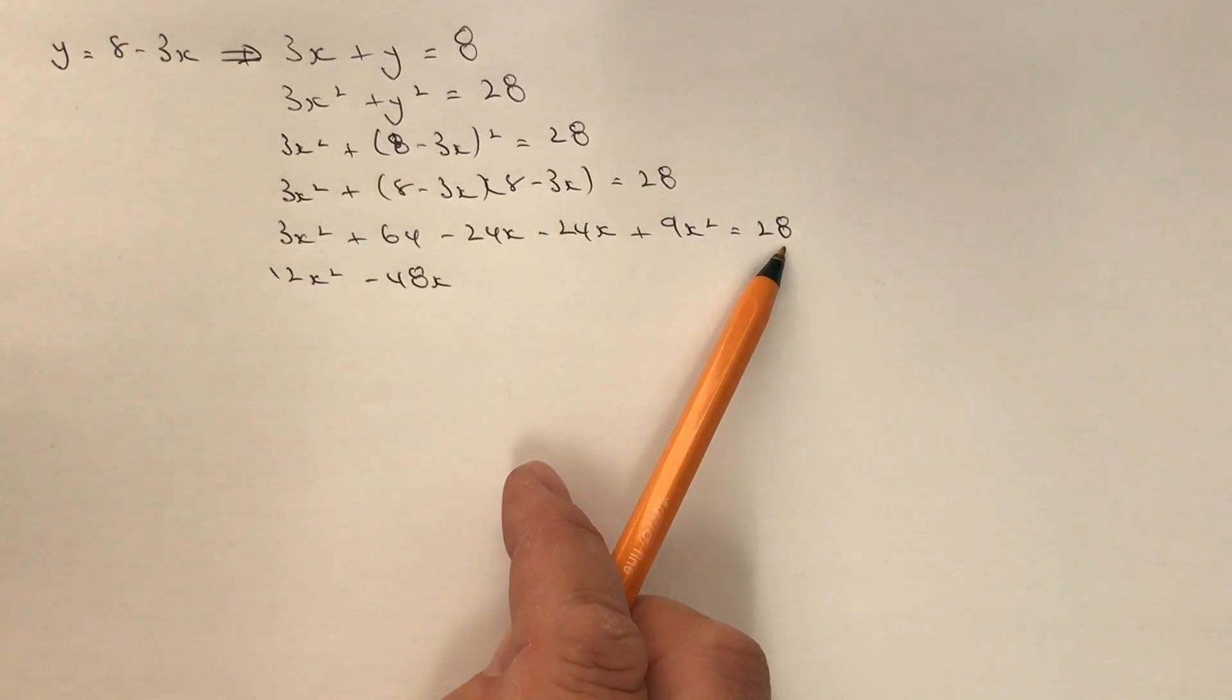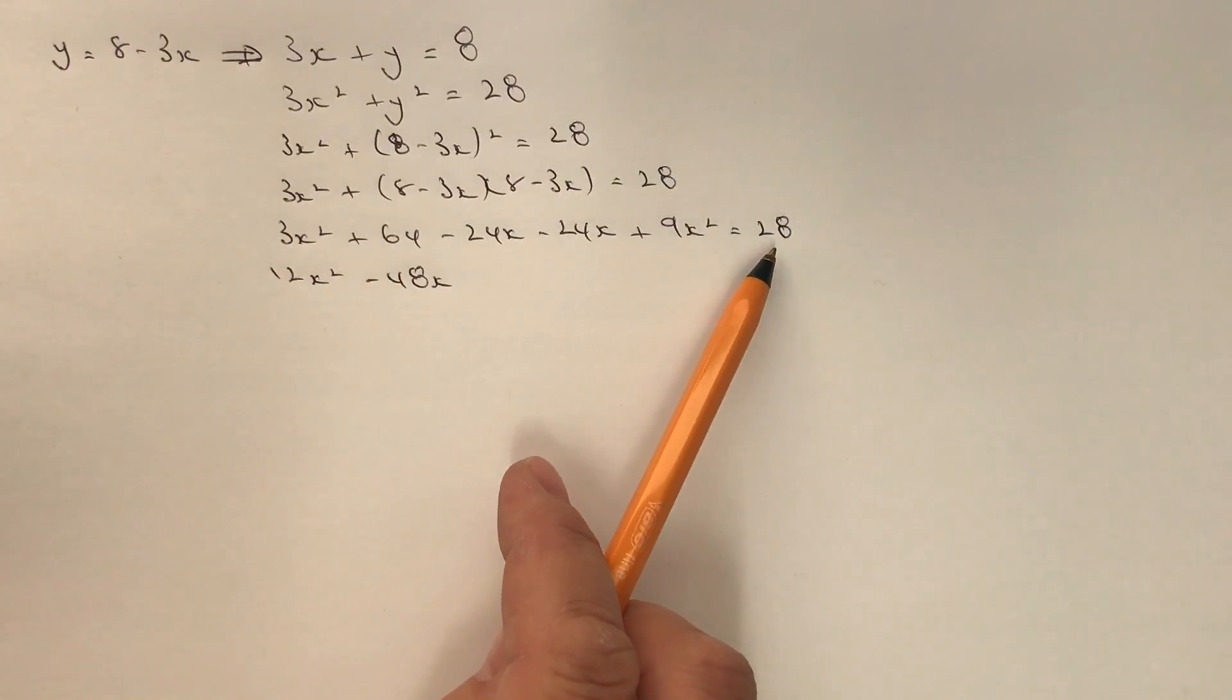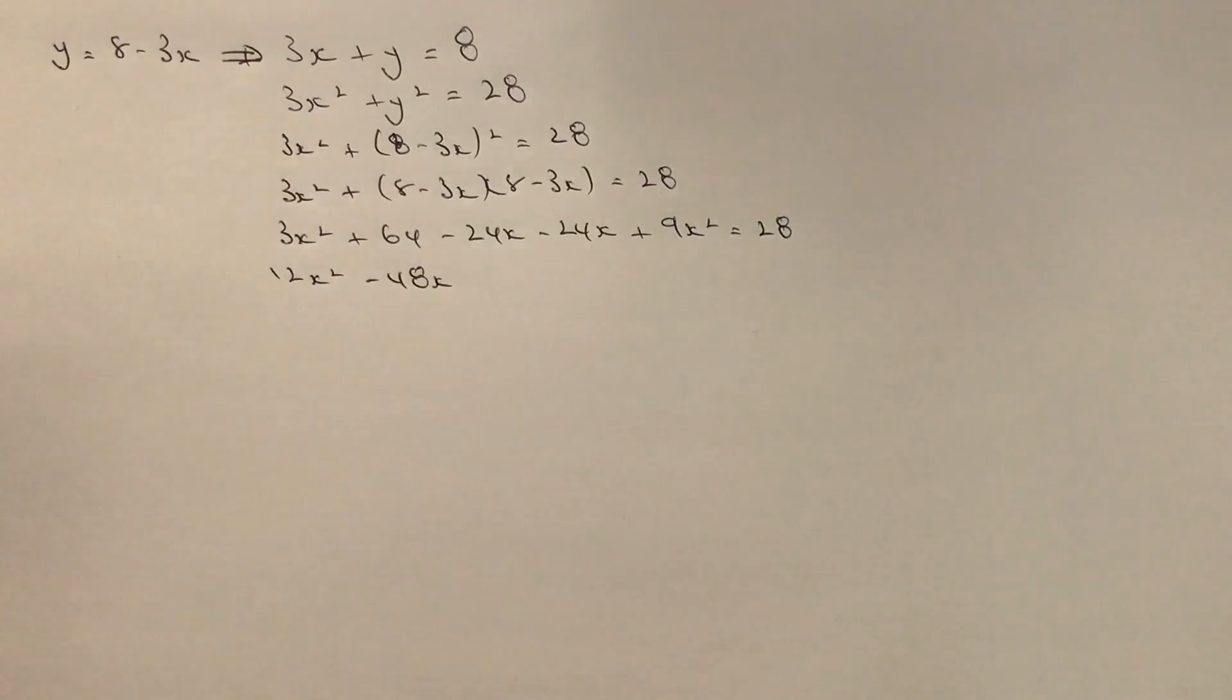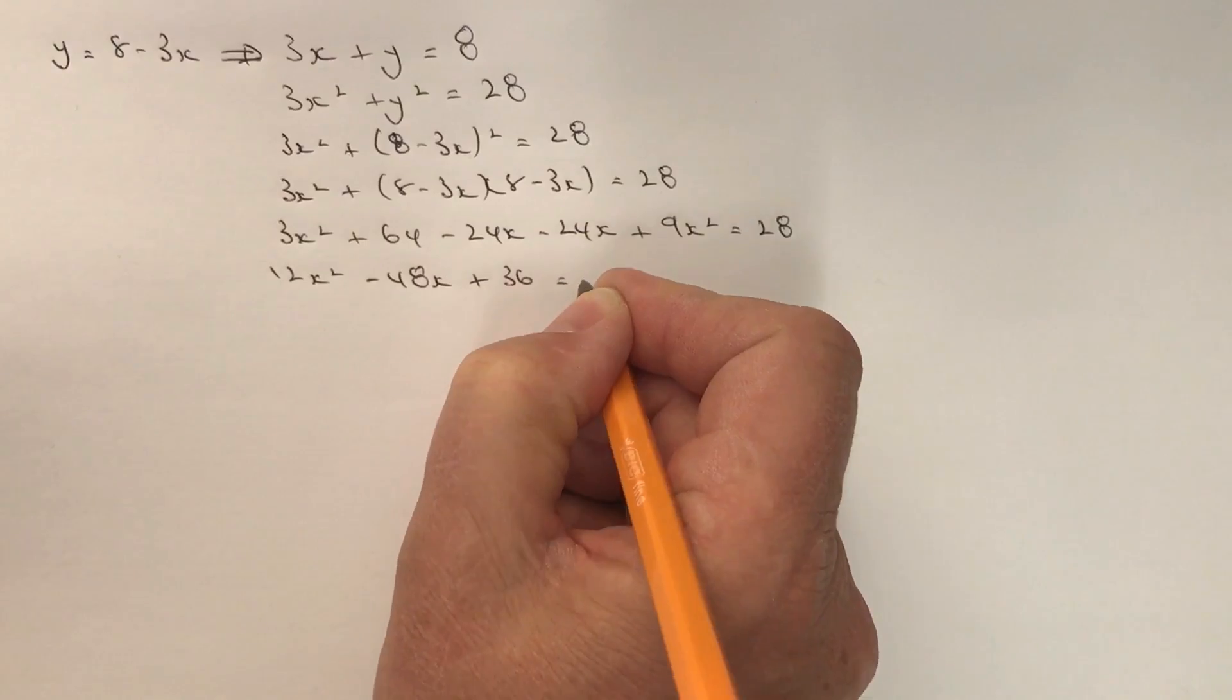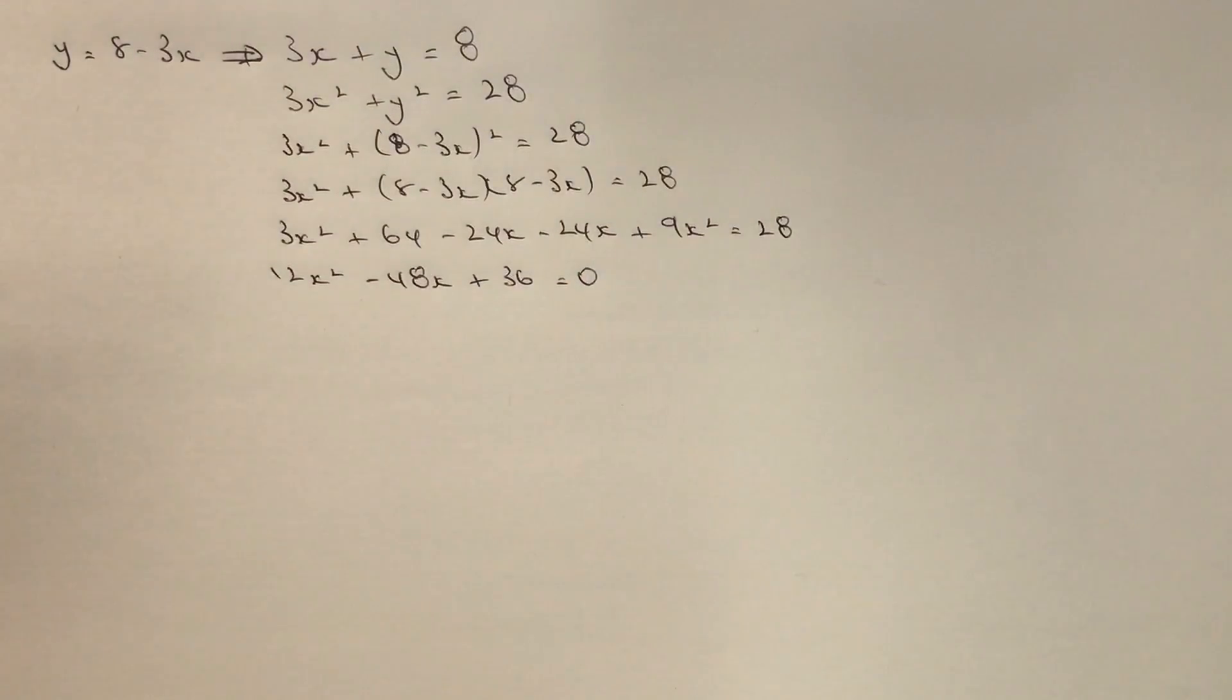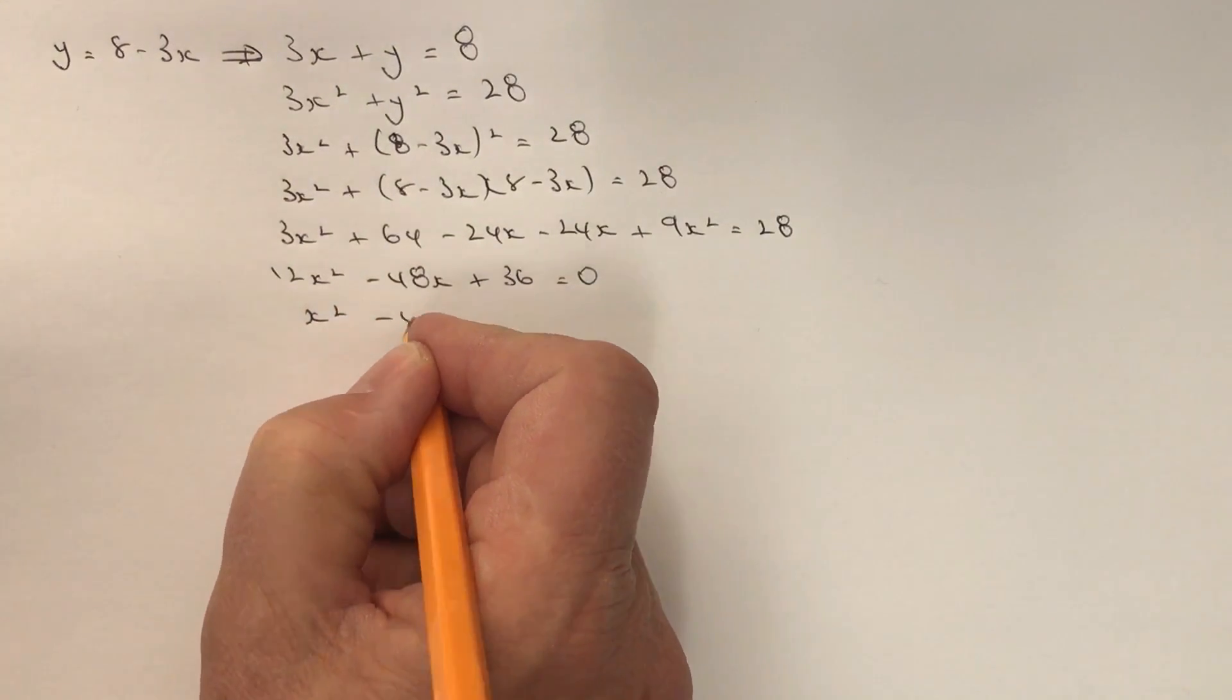So if I bring this 28 over towards this side, I've got positive 64 minus 28. Don't forget, whenever you're trying to factorise anything, you always want to make sure that it equals 0, otherwise you won't be able to factorise it. Now I can divide through by 12, and that's going to give me a very neat x squared minus 4x plus 3 equals 0.